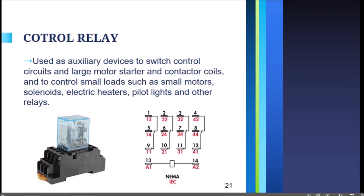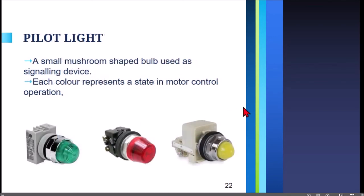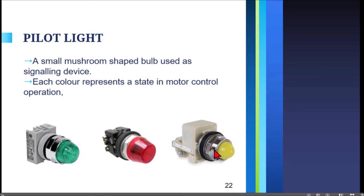Pilot lights are small mushroom-shaped bulbs used as signaling devices. Each color represents a state in the motor control operation. Green indicates run or motor is running; red indicates stop or idle; yellow or orange indicates a fault or emergency — meaning there is a problem with the motor.